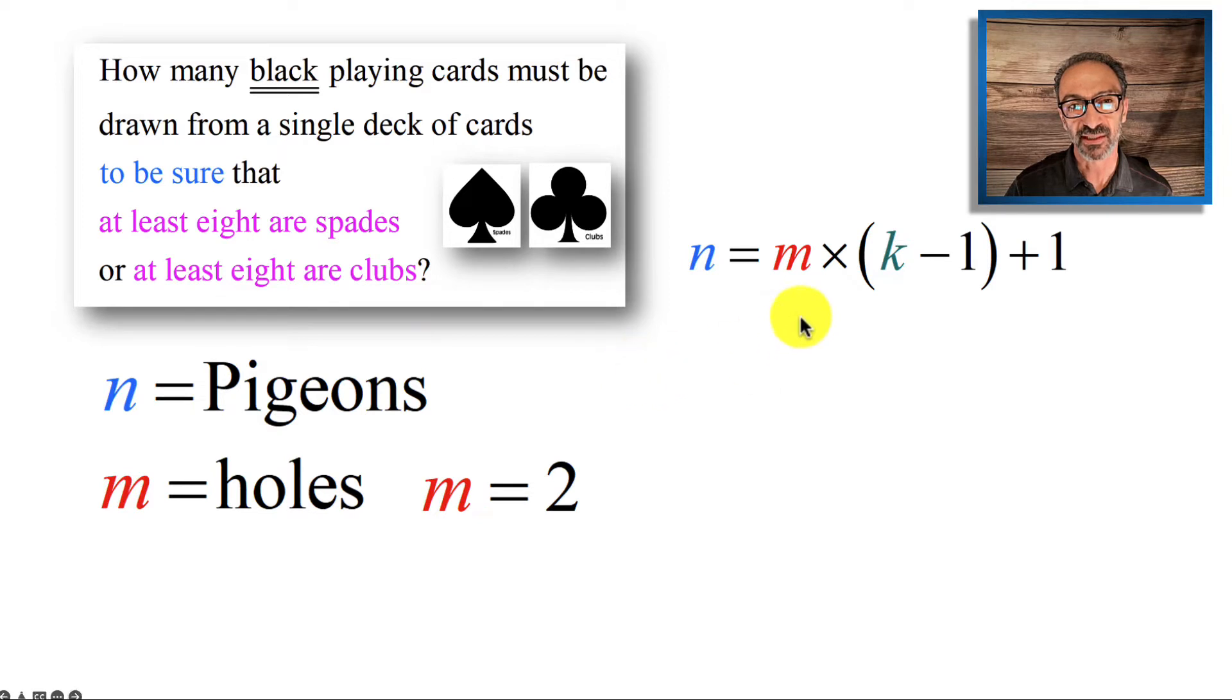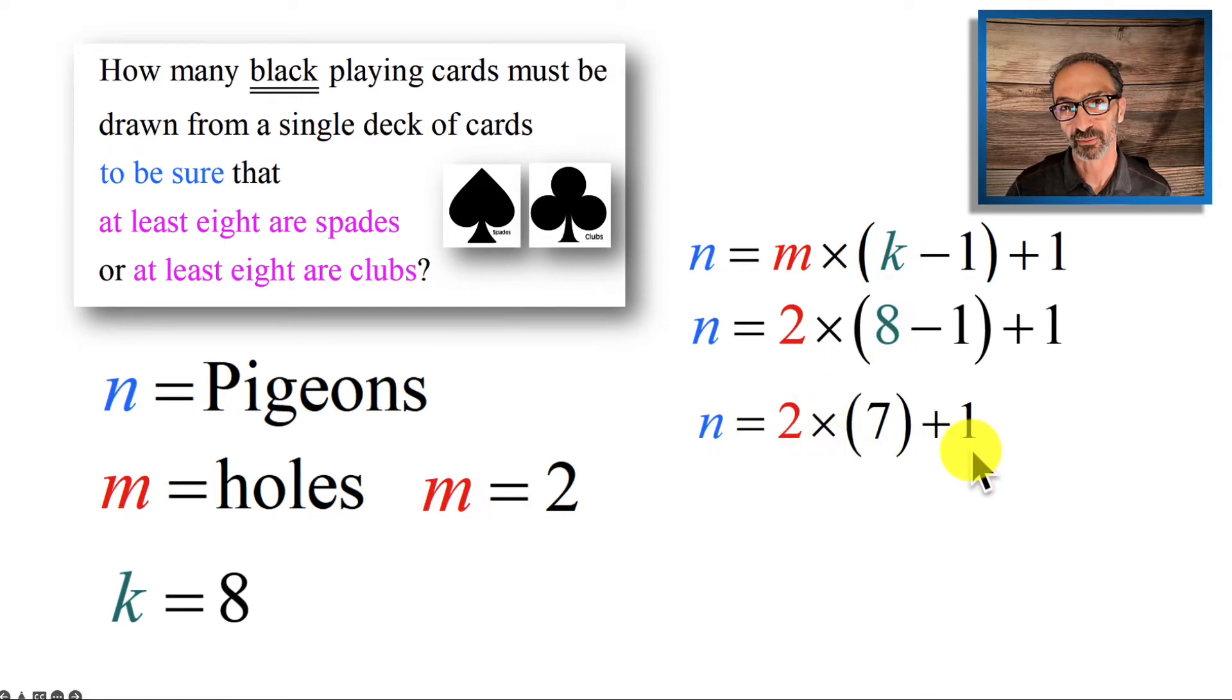Now k, as I mentioned, is eight. And the reason we subtract one is to avoid having eight, to see when we reach our limit and we will be forced to reach what we want, which is eight. So eight minus one is seven. We're going to put seven in each hole, two times seven, then we're going to add one more to make it eight.